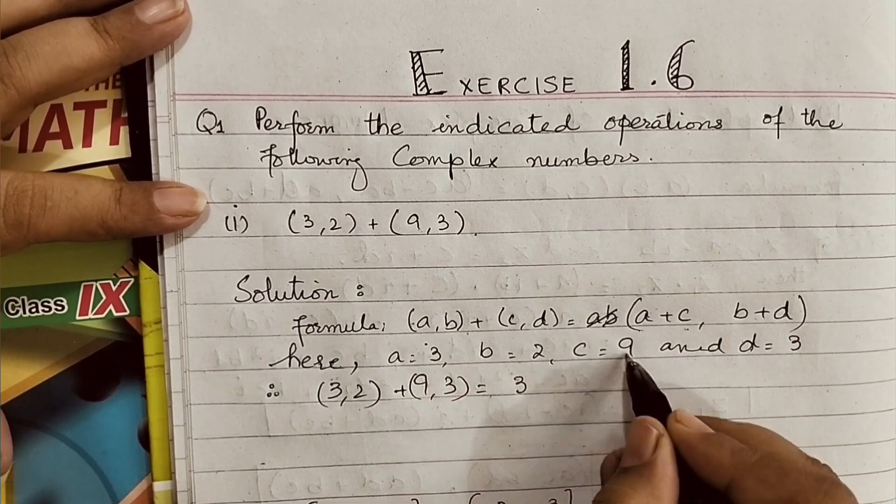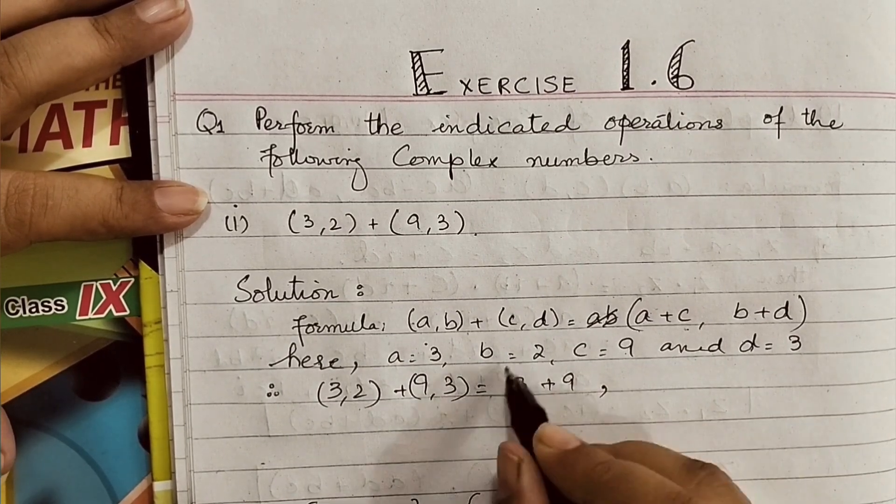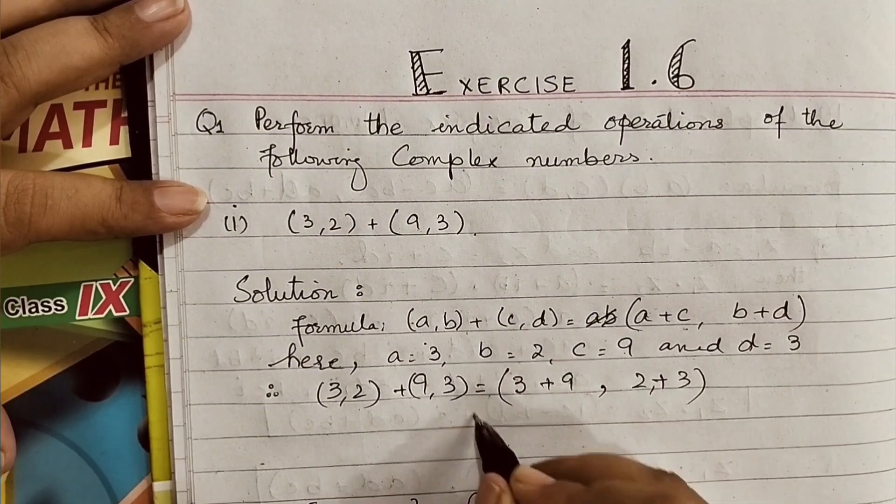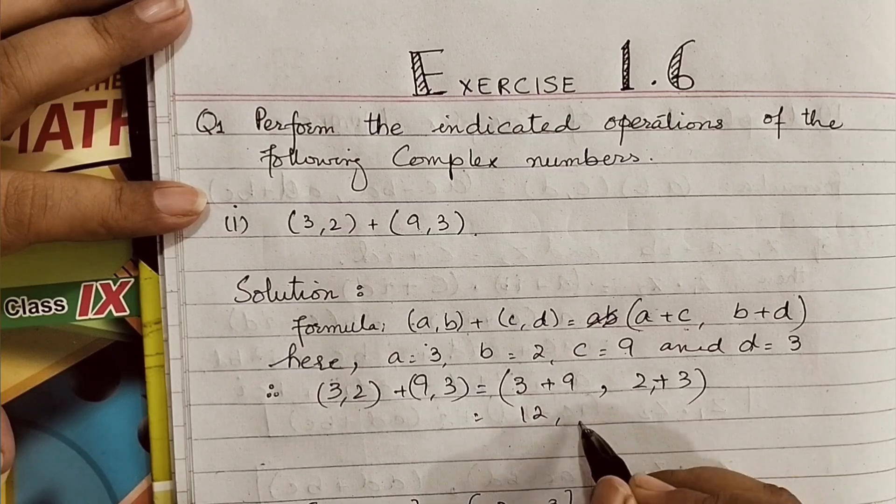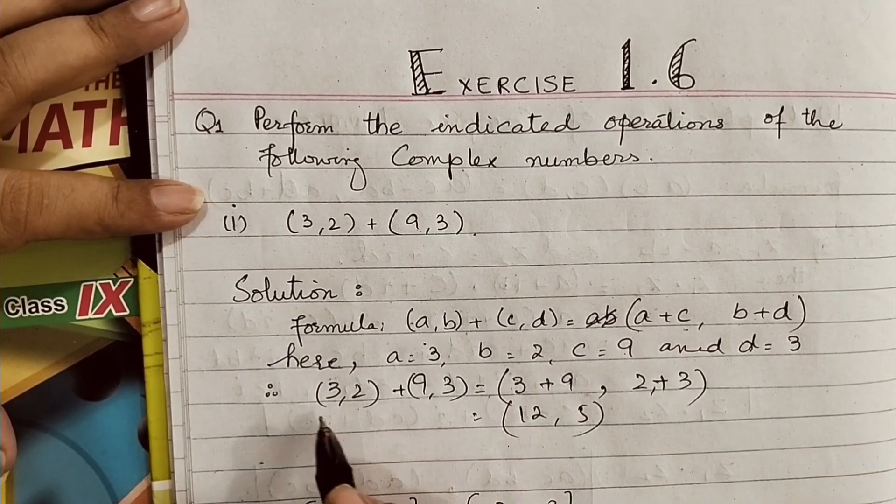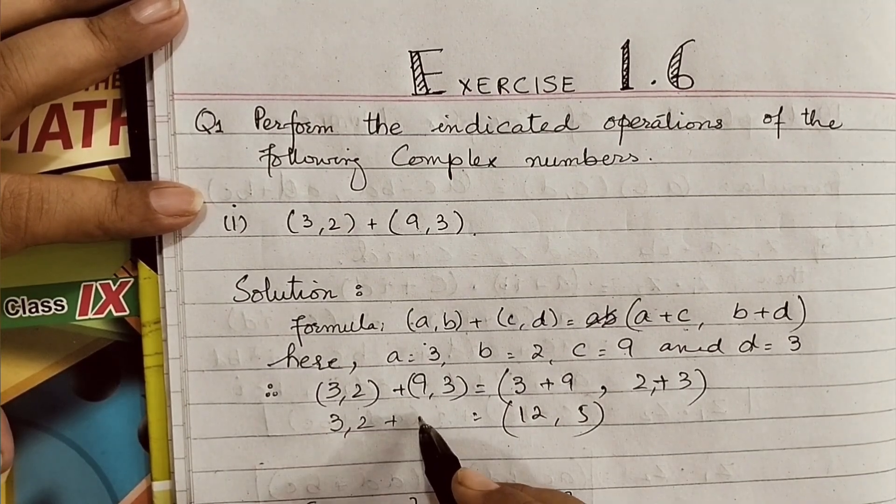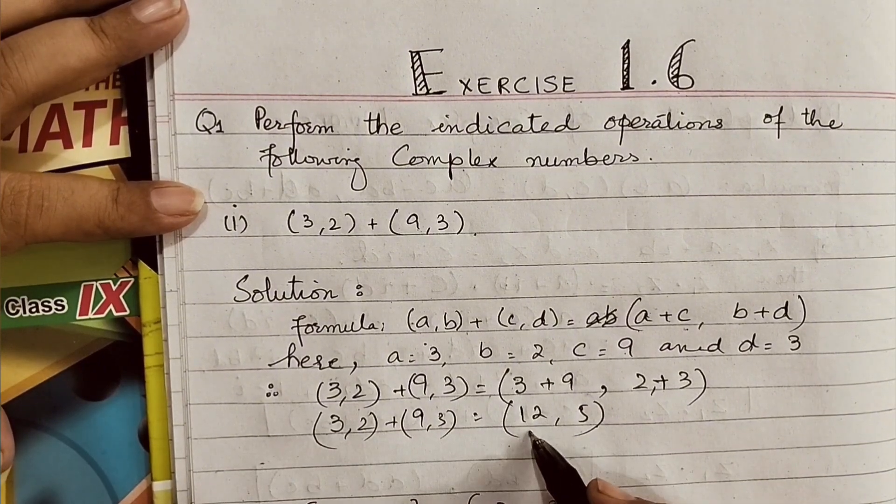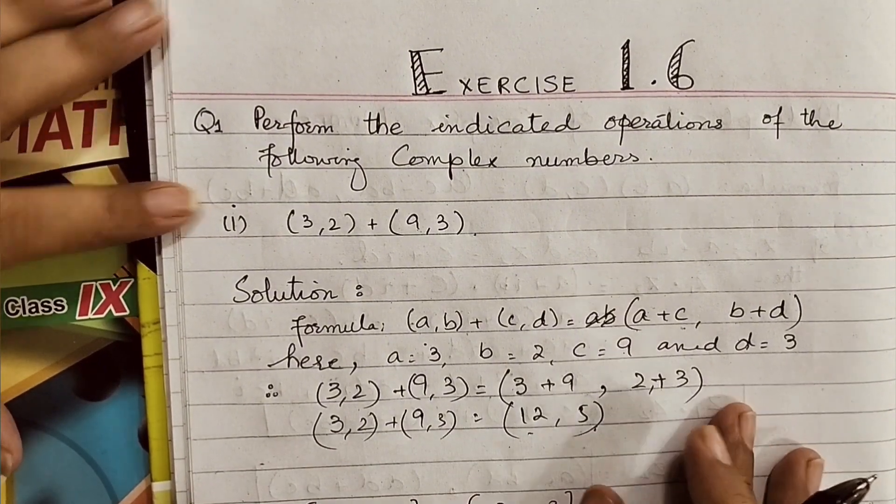Here, a is 3 and c is 9. Now comma, and then b is 2 and d is 3. 3 plus 9 is 12, and 2 plus 3 is 5. So (3, 2) plus (9, 3) becomes (12, 5). 12 is the real part and 5 is the imaginary part.